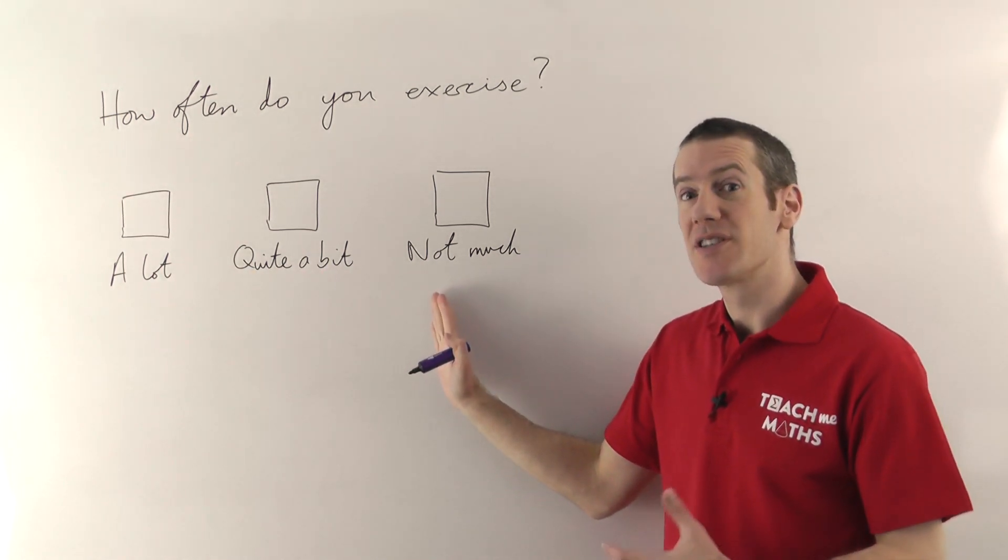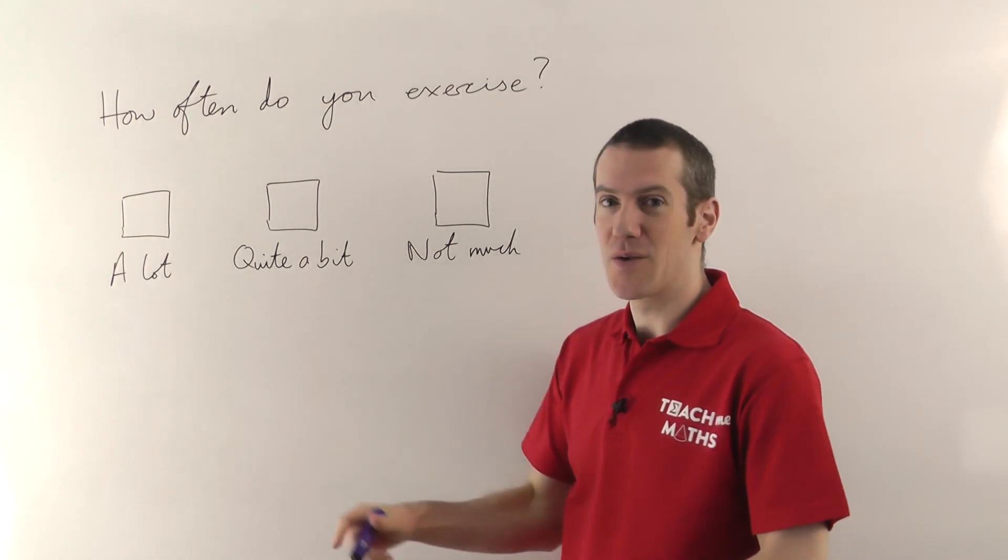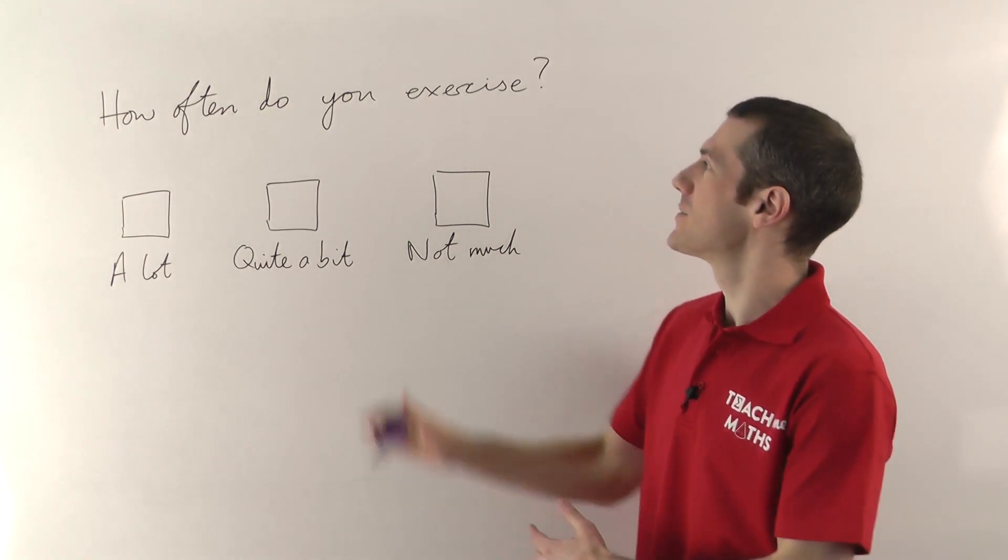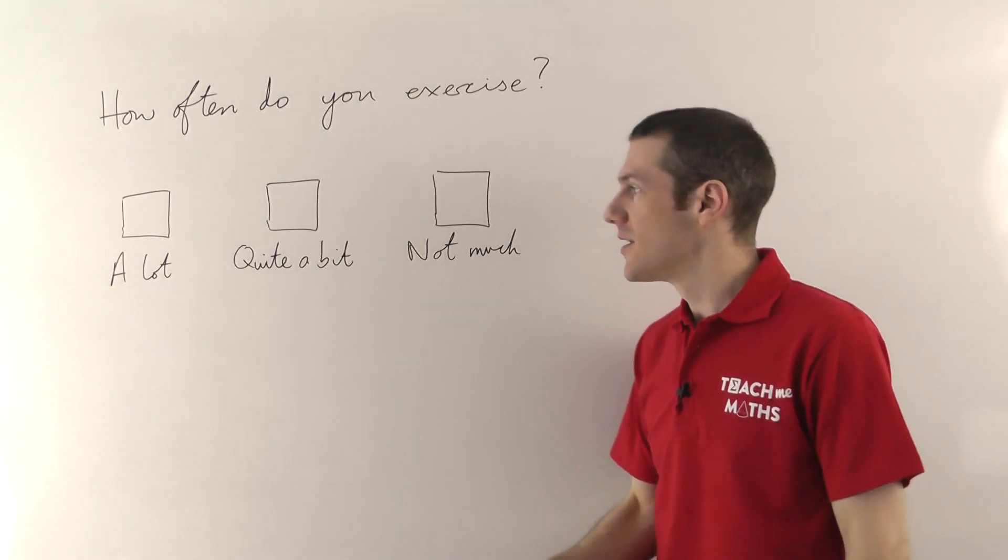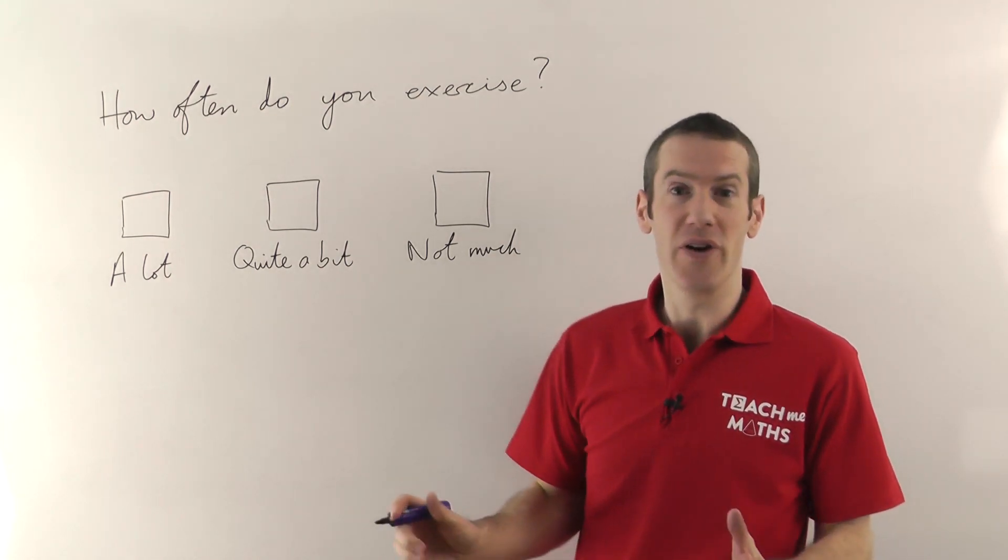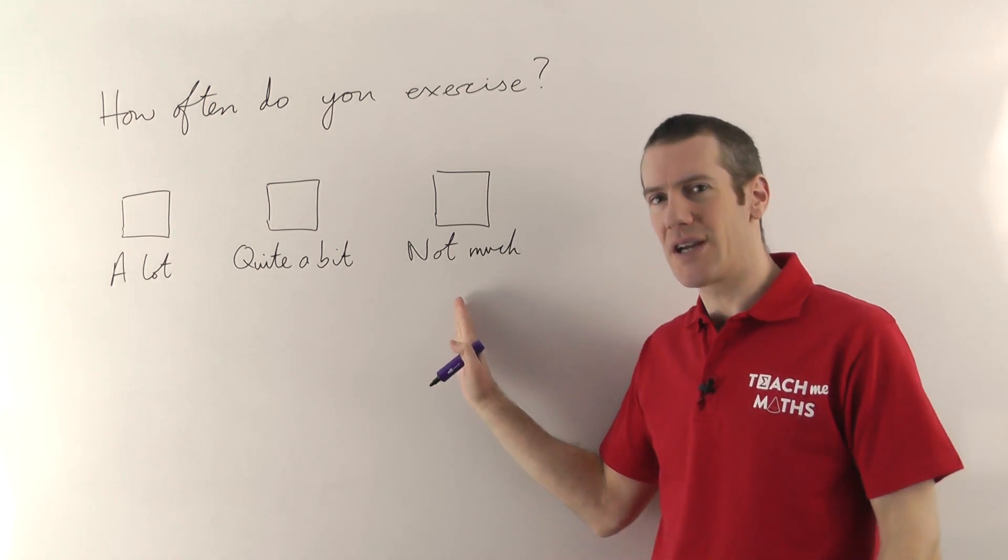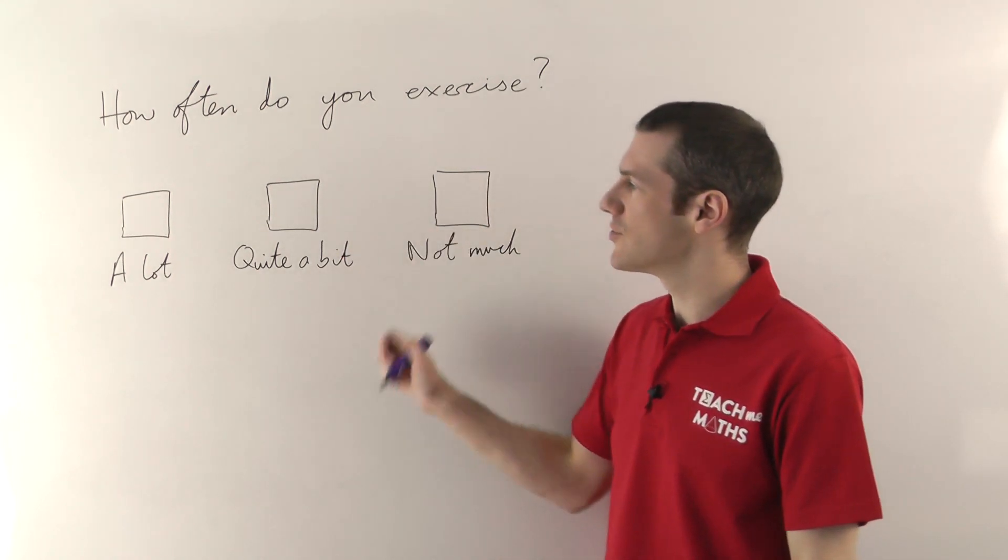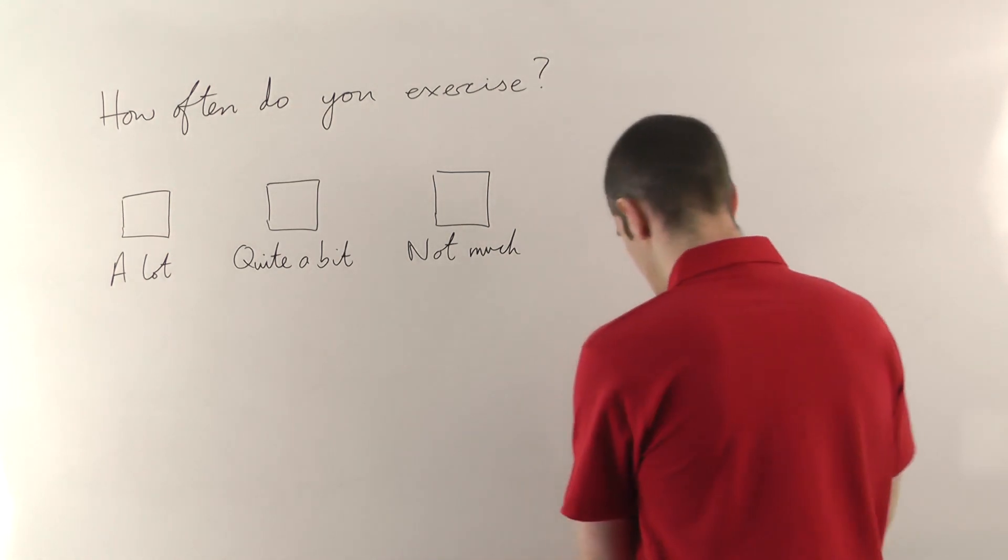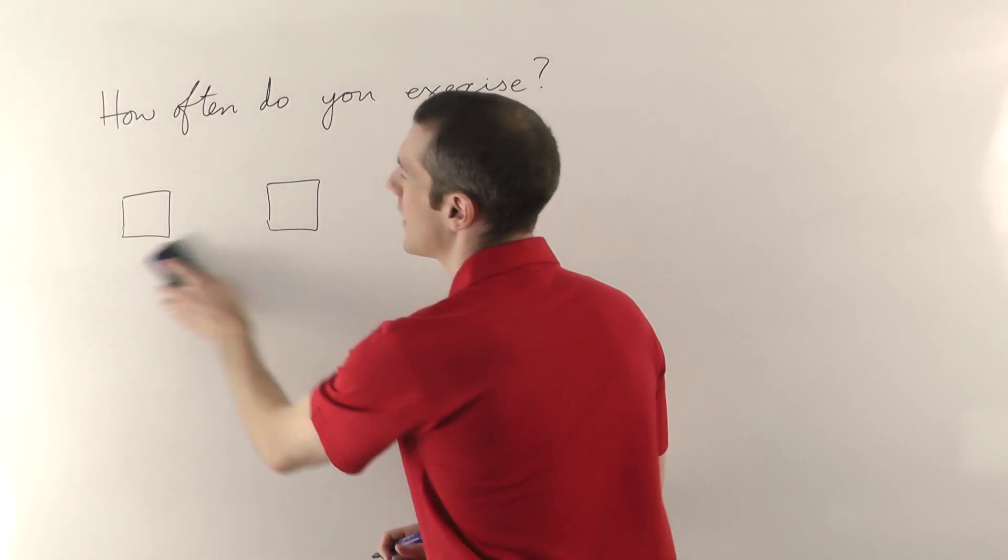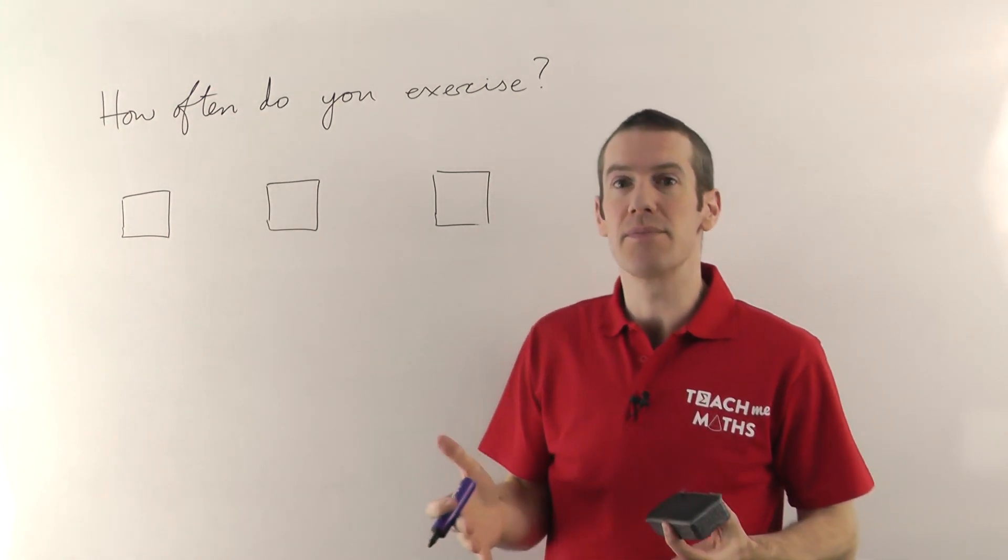These answers are what we call subjective. Different people will interpret them differently. Quite a bit might mean one thing to one person and something very different to someone else. In terms of how often you exercise, if somebody exercises a few times a week they might say, yeah that's quite a bit. For someone else, once a fortnight might be quite a bit. Depends how often you're used to exercising. So you don't want to use subjective terms like this. If you're asking a question, you generally want to give ranges involving numbers wherever possible. So let me give you an example here.